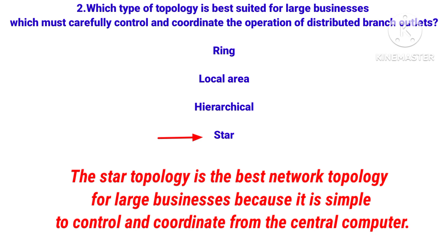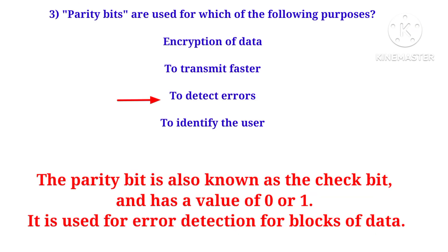The correct answer is to detect errors. Parity bits, also called check bits, are used for error detection. It is mainly used for error detection for blocks of data.